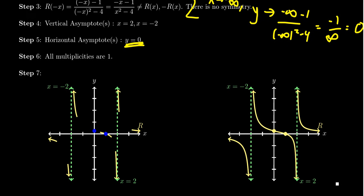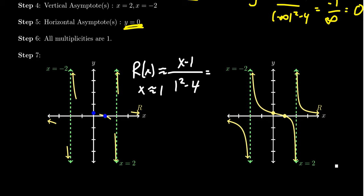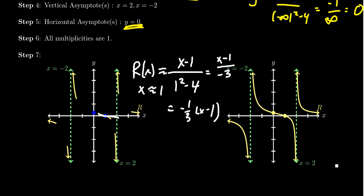As x approaches positive infinity we approach the x-axis from above; as x approaches negative infinity we approach from below. Near the x-intercept at x = 1, the function approximates r(x) ≈ (x − 1) / (1² − 4) = (x − 1) / (−3), which looks like a line with slope −1/3 — shallow and with a negative slope, which explains the behavior near that intercept.